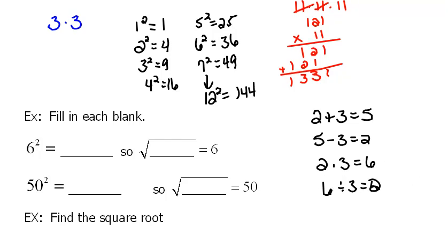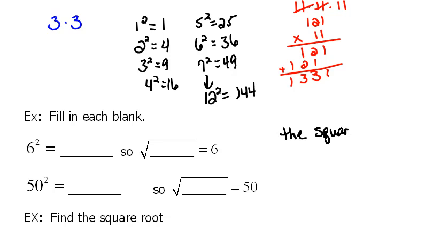When we talk about exponents, they have a forwards, or they are like a forward operation. The opposite, or the backwards operation, from squaring something, is to square root it. So, the square root of a number is the opposite of squaring.